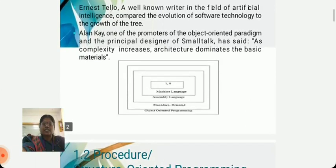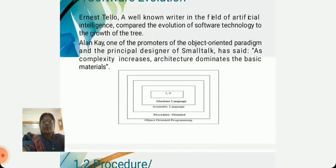Software Evolution. Initially, programs were written in zeros and ones, called machine level language. After that, assembly language was invented, which contains mnemonic words. Then the procedure oriented concept was invented, which is a high level language. After that, object oriented programming was invented.